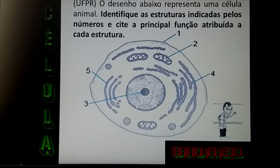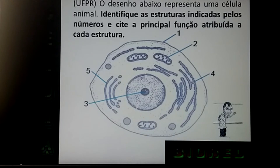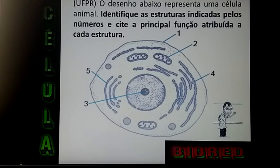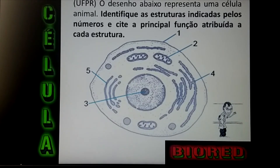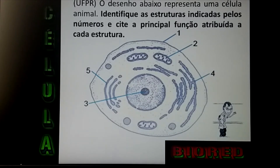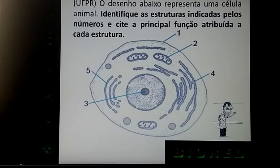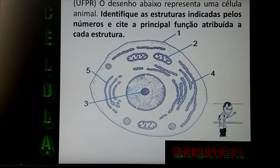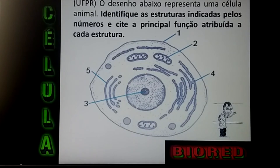O número 2, você pode perceber que é a mitocôndria e faz respiração celular. O número 3 está dentro do núcleo, é uma estrutura esférica — é o nosso nucléolo — e a função dele é síntese de ribossomos.